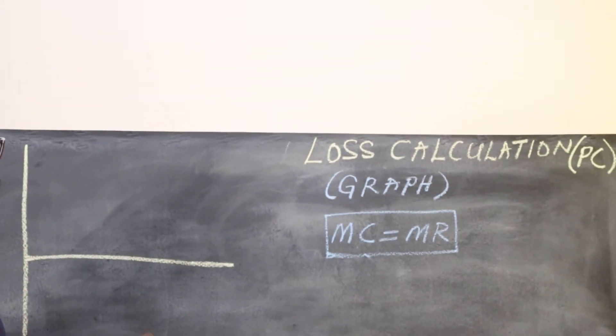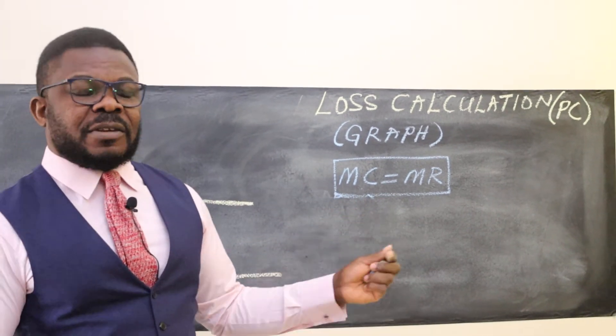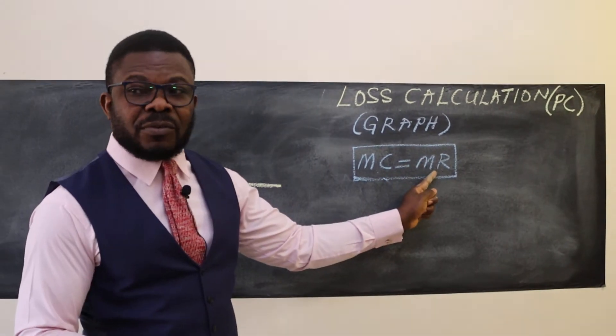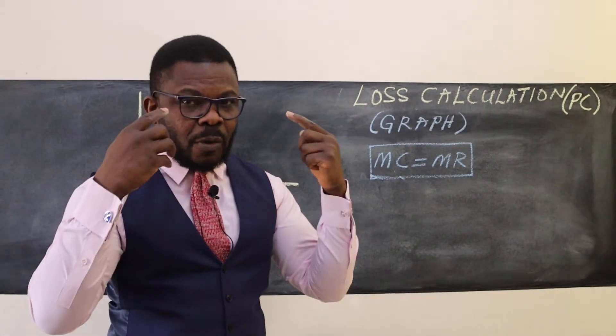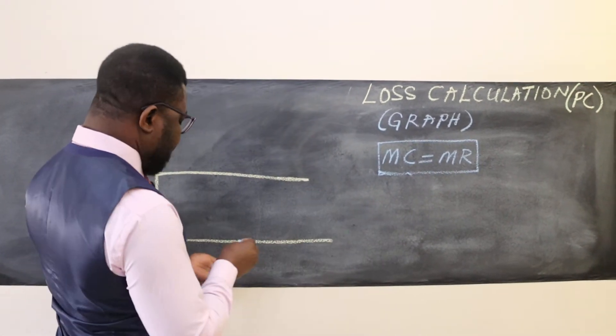Remember the formula that we have to look for all the time: the profit maximizing condition is marginal cost equals marginal revenue (MC = MR). That has to always be in your mind when you start looking at this analysis.